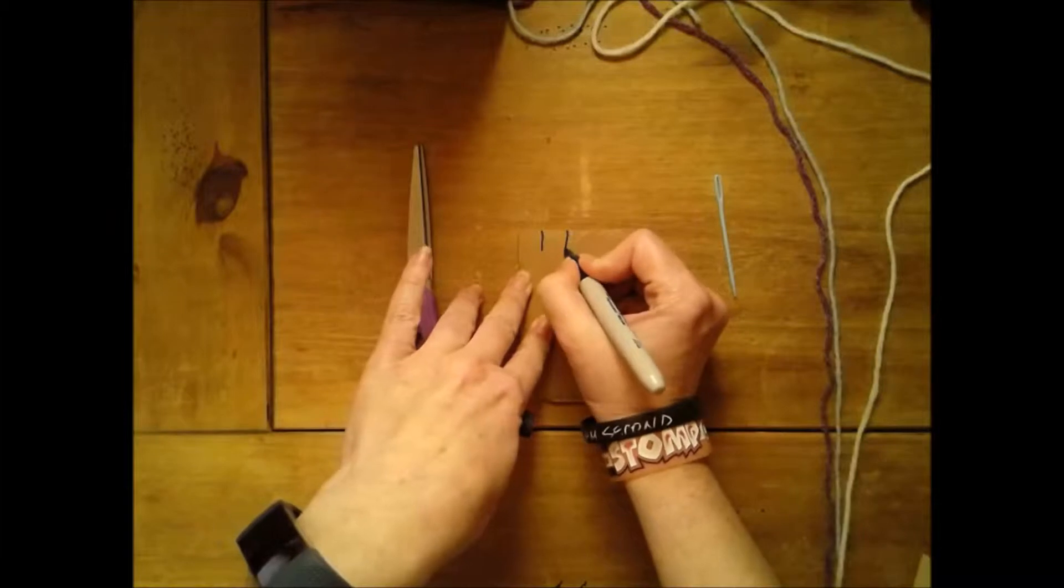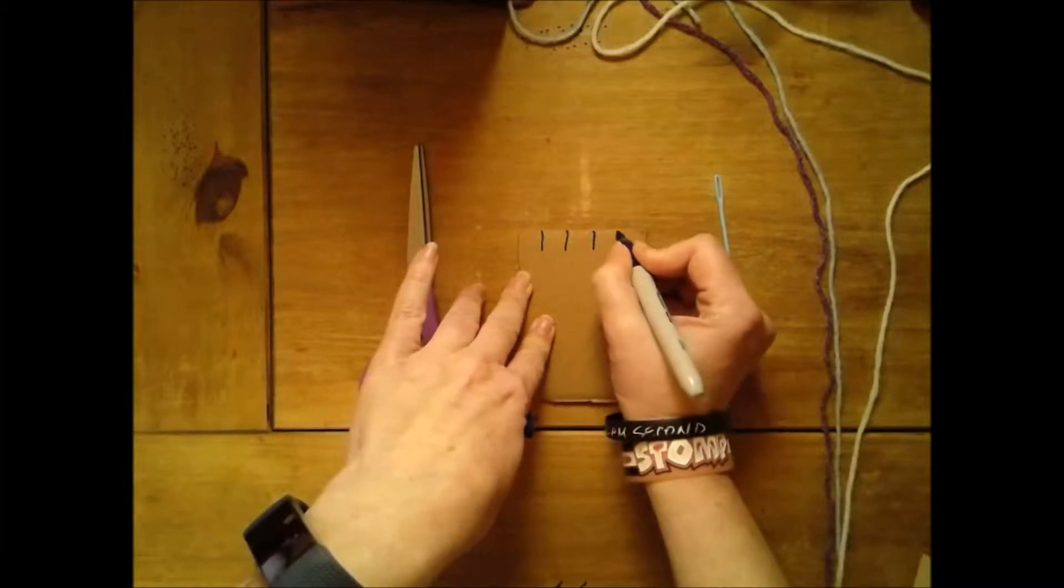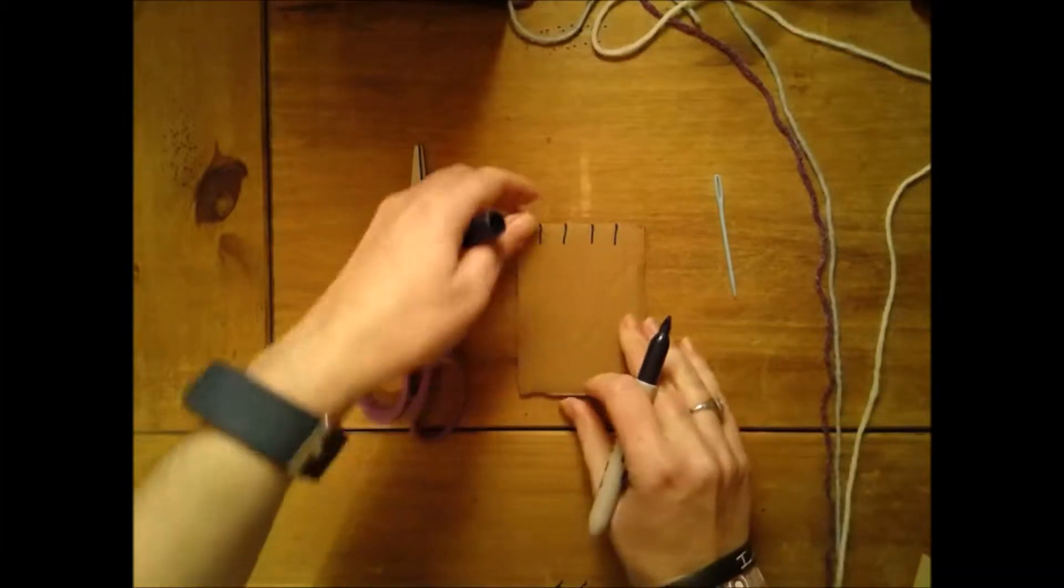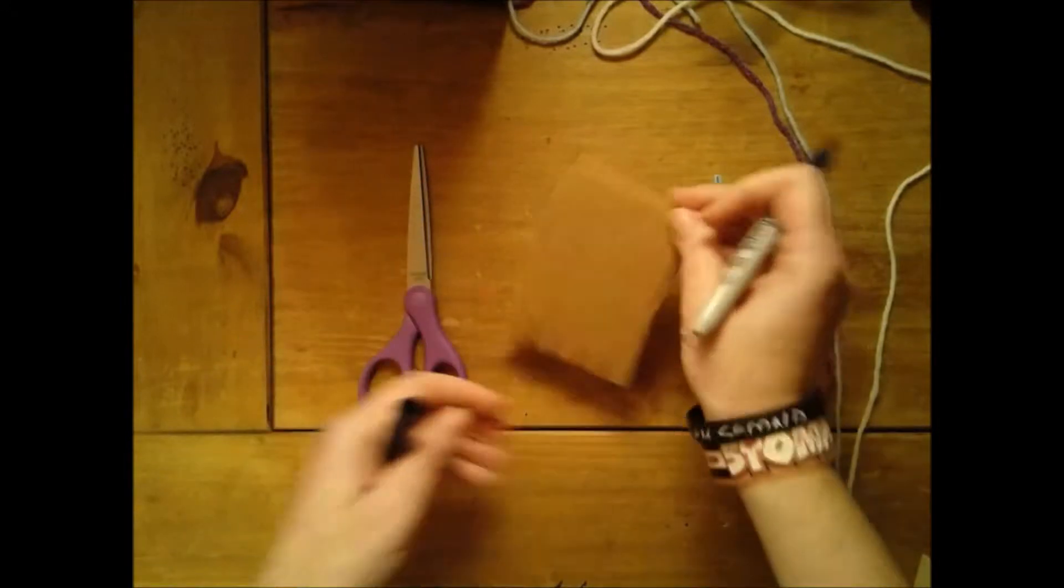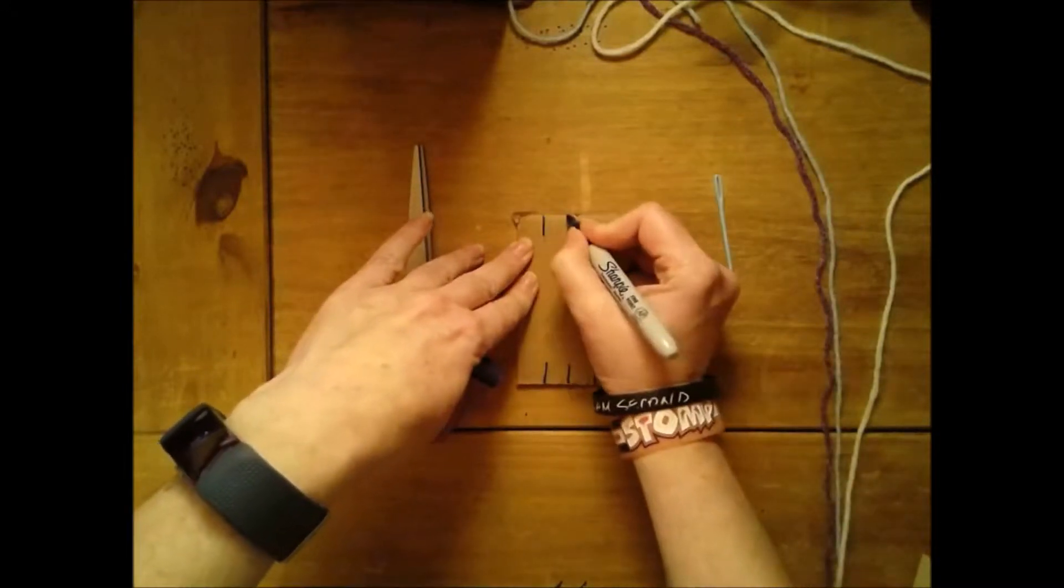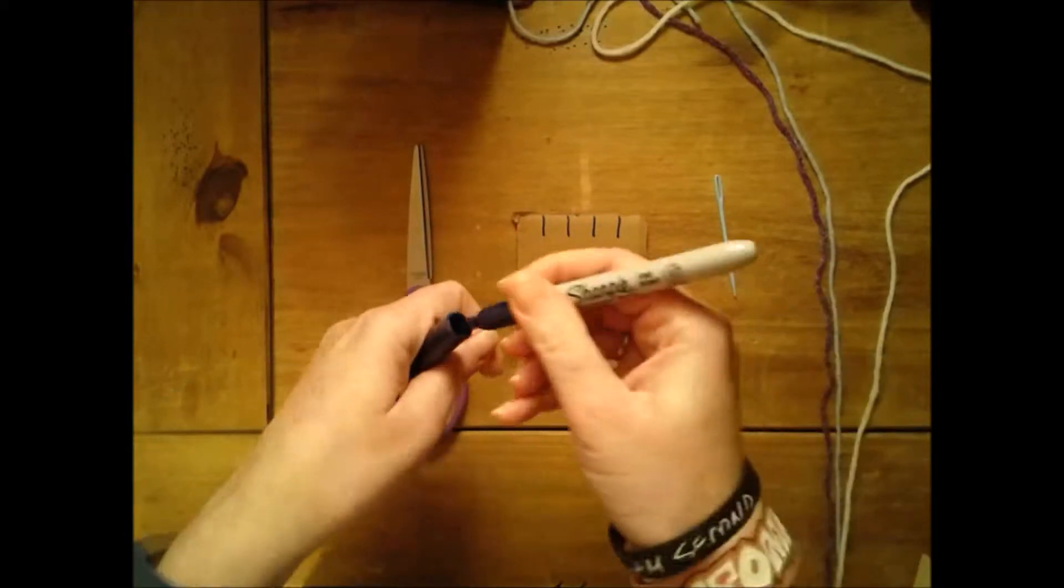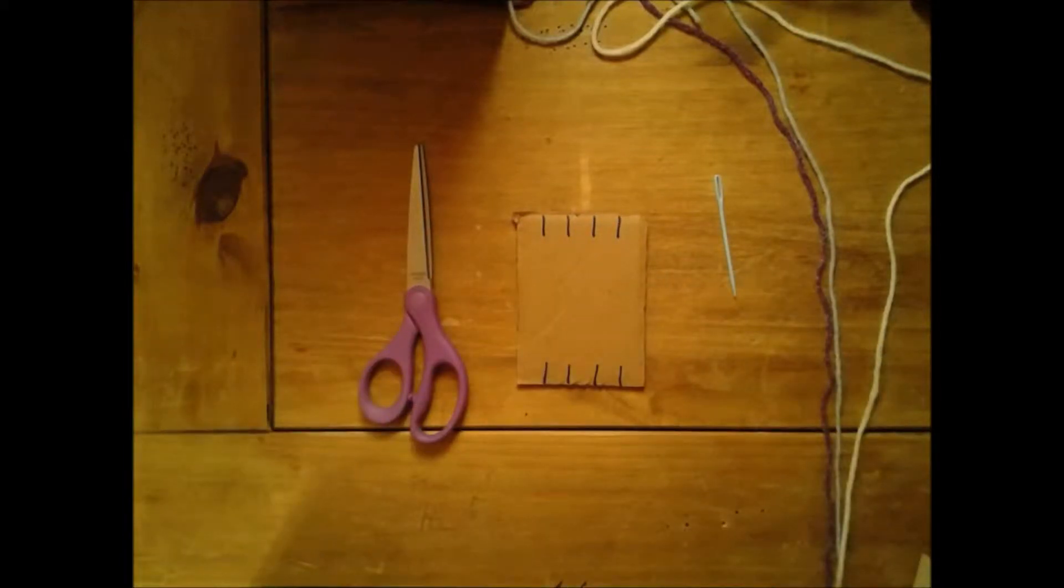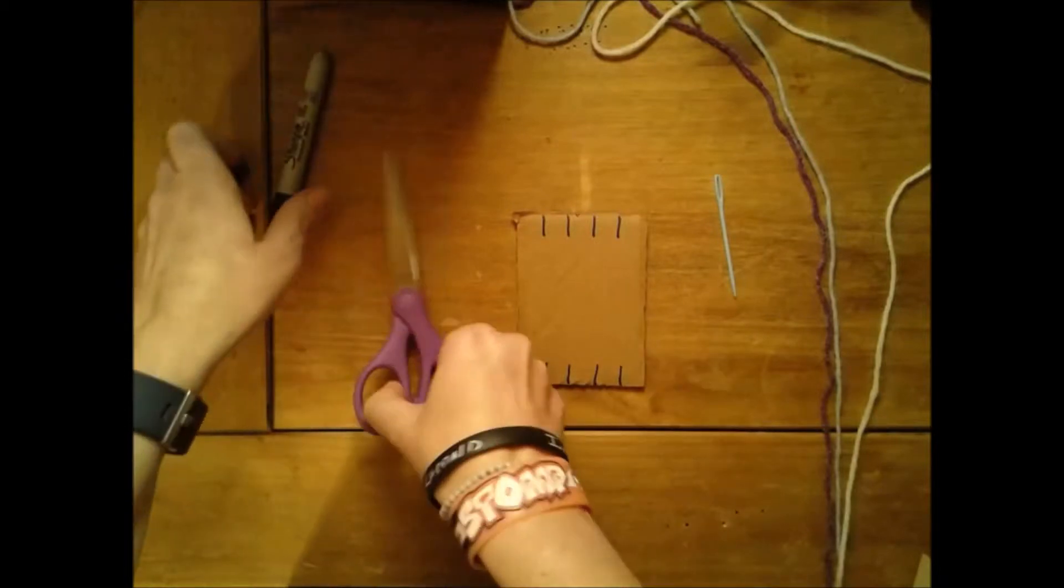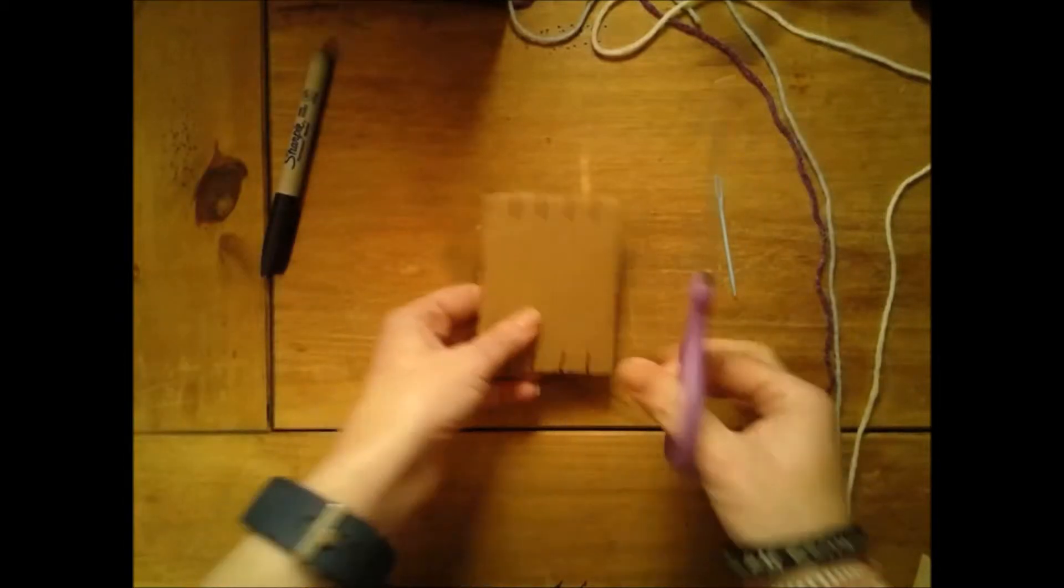You always want to make sure that you have an even number, so I'm going to start with four. Then I'm going to turn it around to the bottom and I'm going to do four more. You don't need to use a Sharpie for this; I'm just doing it so that you guys can see my lines easier.